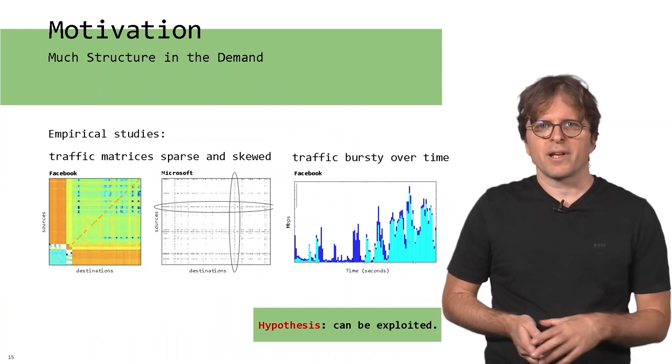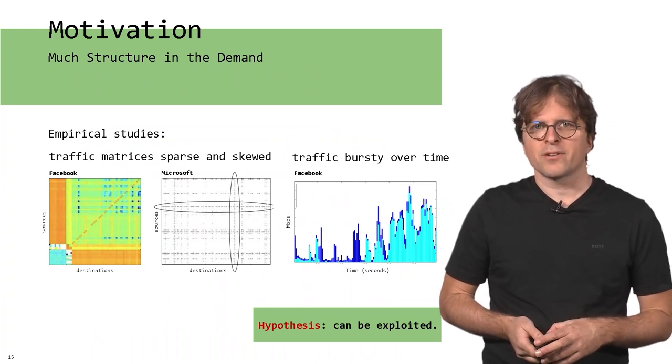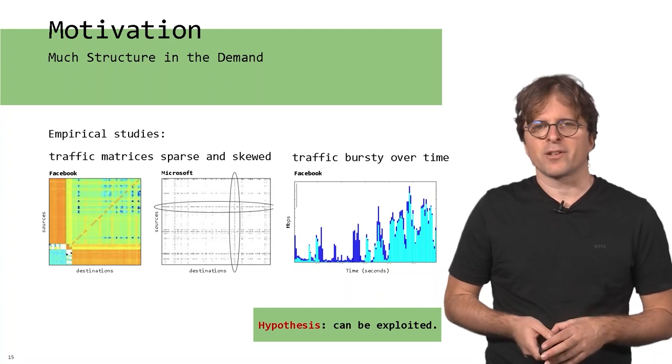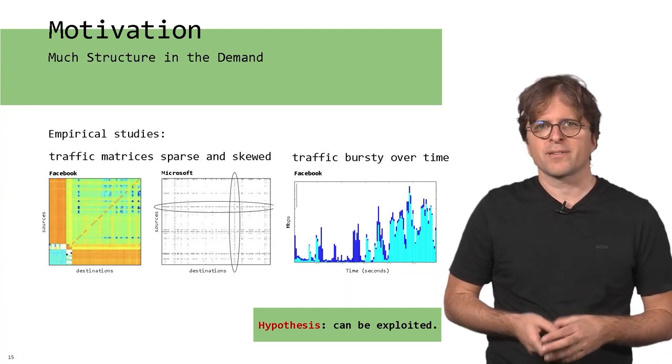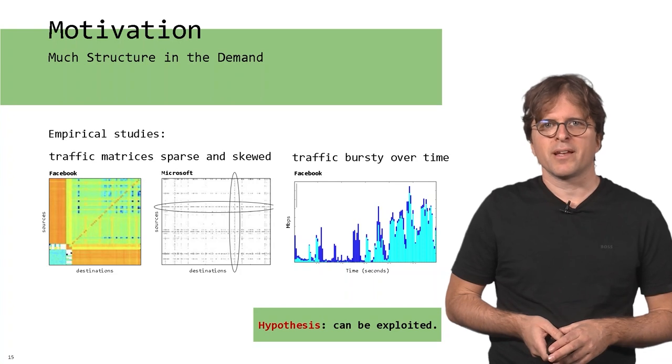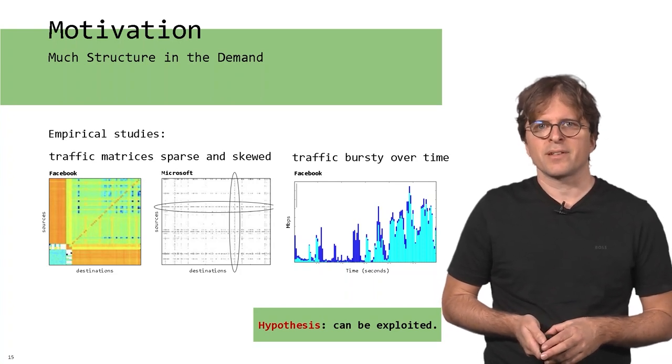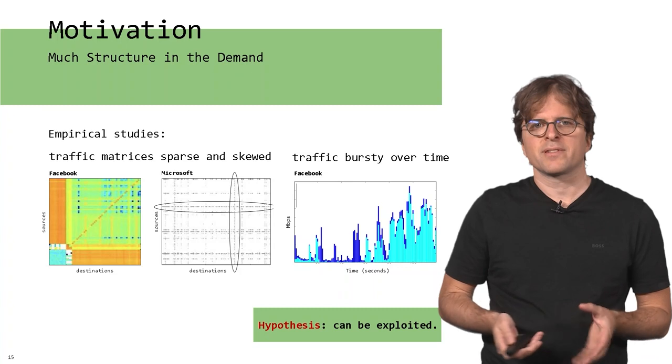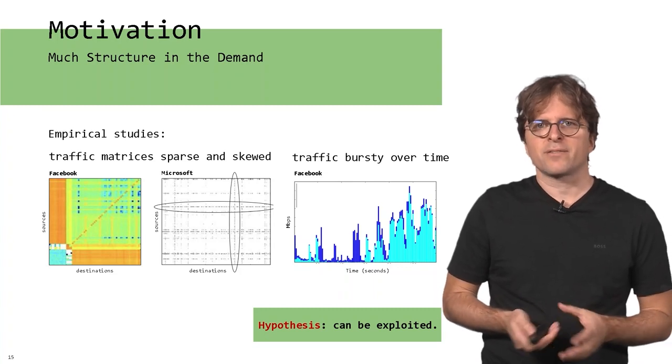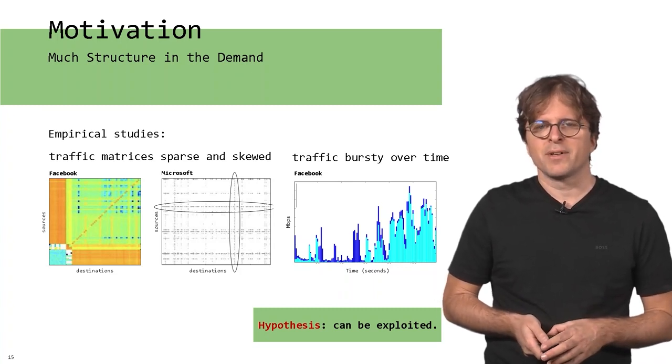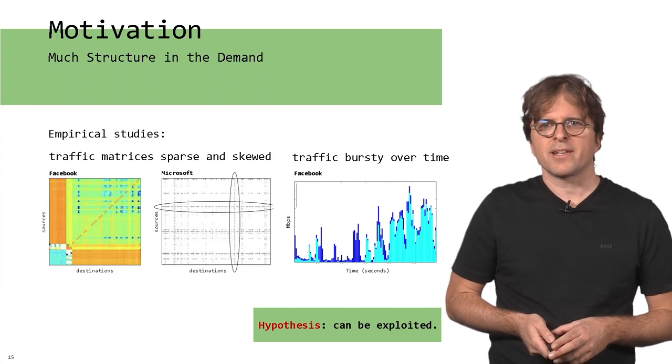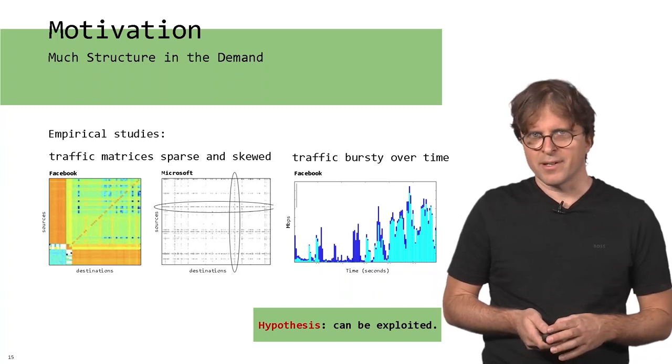The empirical motivation behind this technology is that there is a lot of structure in traffic traces. Studies at Facebook and Microsoft show that traffic is sparse and skewed, so traffic matrices have a lot of structure. Traffic is also very bursty over time, and the hypothesis is that this can be exploited for optimization.